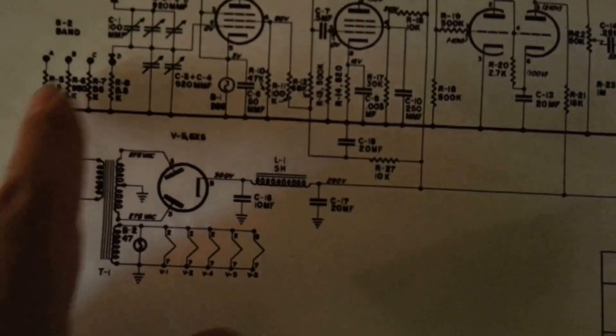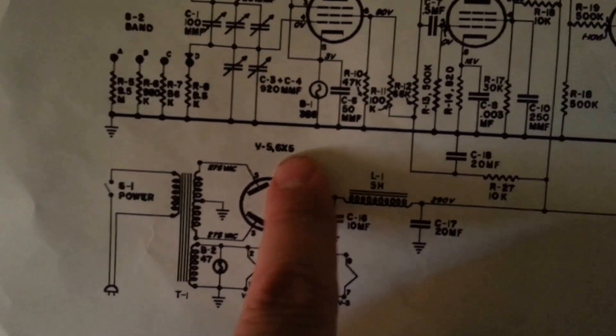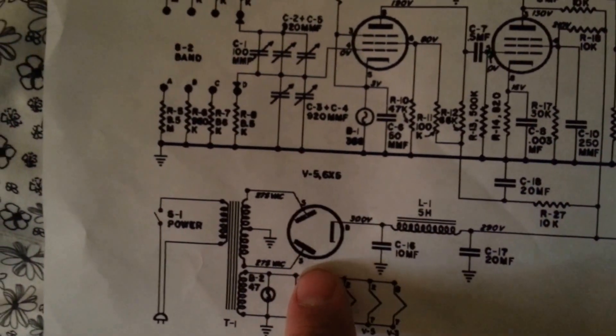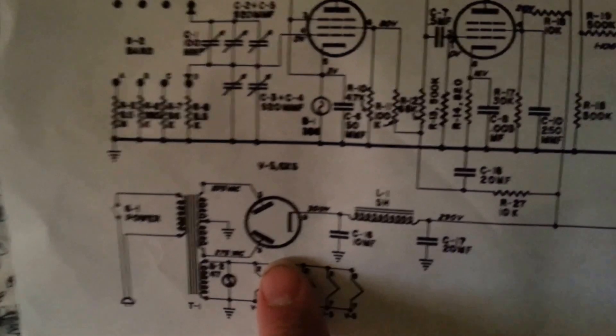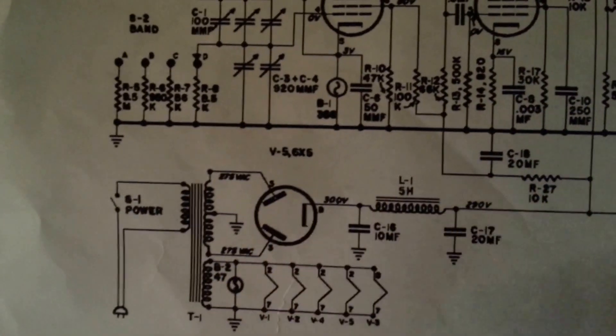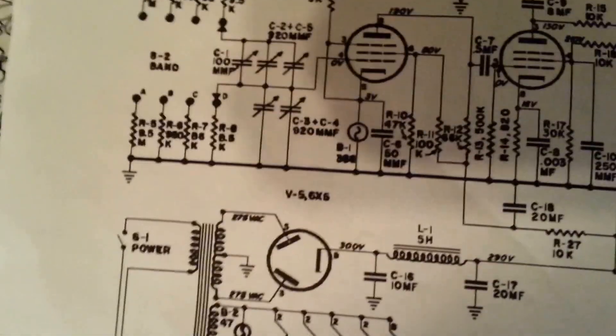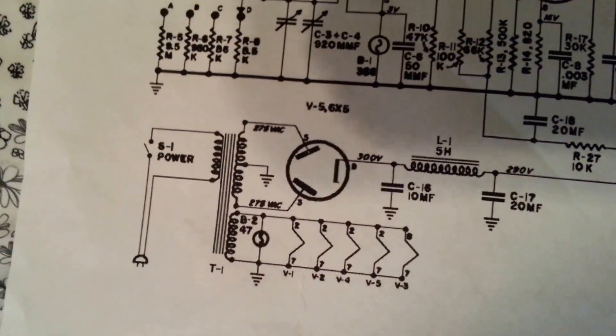And this right here is your power supply. This tube, which in a lot of applications is a trouble tube, is really considered a trouble tube at least in the older tube designs because they have been known to have filament cathode shorts and destroy the filament transformer.